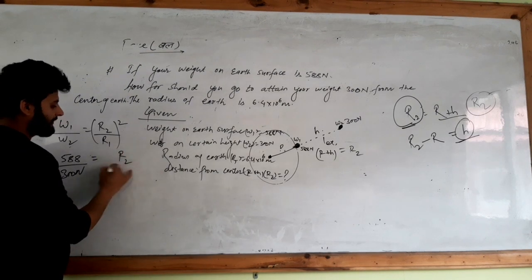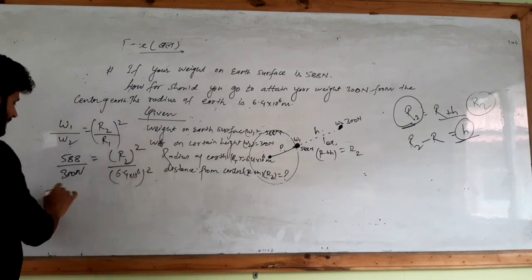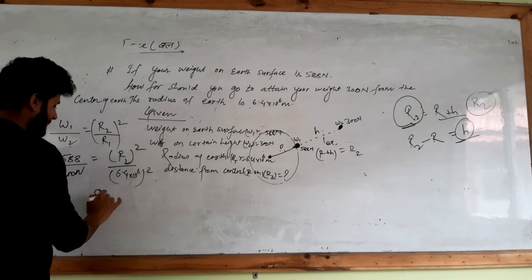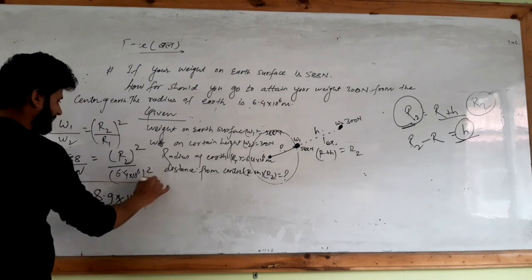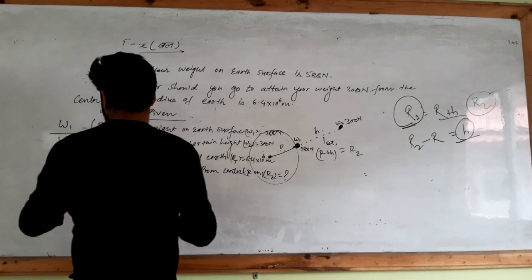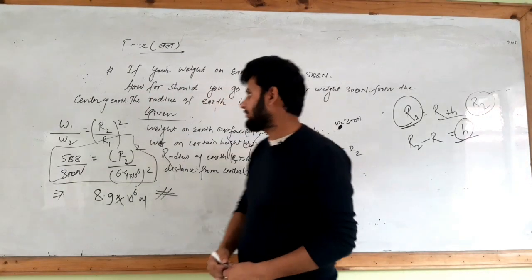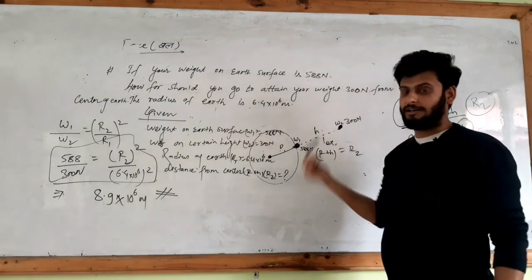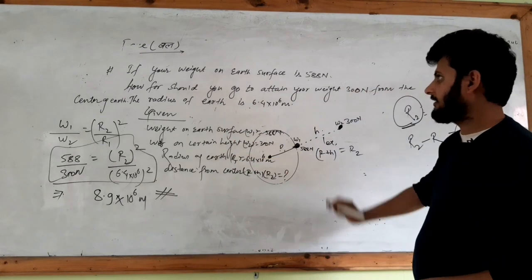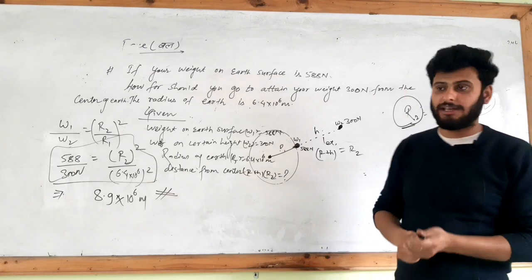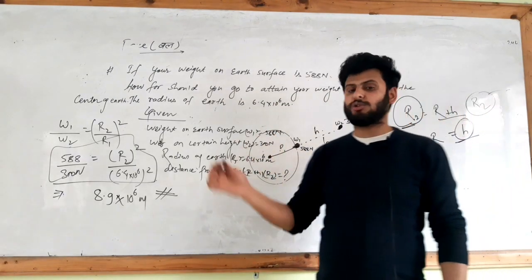We can substitute R1 as 6.4 into 10 to the power 6. The calculated answer is R2 equals to 8.9 into 10 to the power 6 meters. We should go through the process together. Today we practiced all the resources and the formula. Thank you.